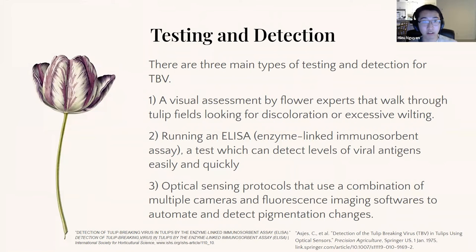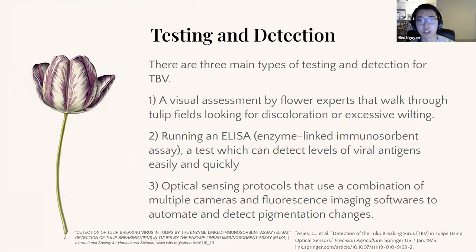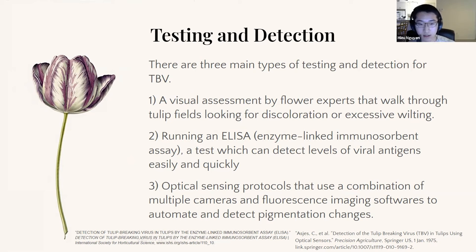There are three main ways to detect TBV. First, people can walk around and visually assess for the different discolorations. You can also run an ELISA, which uses an antibody that recognizes the TBV antigen, binding onto it to tell you how much virus is there. As well as new optical sensing protocols that use immunofluorescent imaging and multiple cameras to automate and detect pigmentation changes.